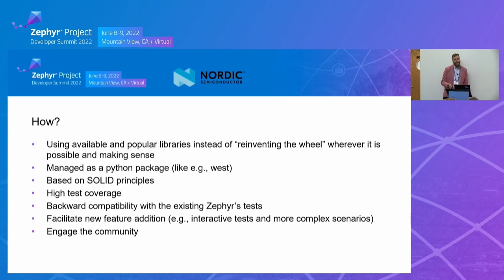So how do we want to do this? The idea is to use popular and existing frameworks — we don't want to reinvent the wheel whenever possible. We'd like to develop and maintain Twister as a Python package, similar to how West is. Not just as part of the Zephyr source code, but as its own package. We want to base it on solid design principles, provide high test coverage from the get-go, and ensure it is backward compatible with the existing Zephyr test base. Crucially, we want to facilitate new feature additions.